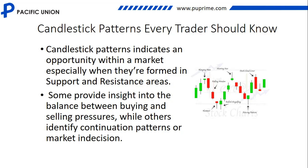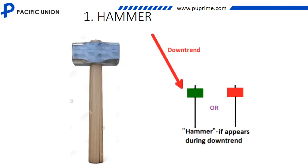Candlestick patterns indicate an opportunity within the market, especially when they are formed at support and resistance areas. When you see candlesticks forming at the support in an uptrend, it tells you there is a tendency that the market will buy. In a downtrend, when you see candlesticks forming at a resistance area, it tells you the candlestick will sell. Some provide insight into the balance between buying and selling pressure, while others identify continuation patterns or market indecision.